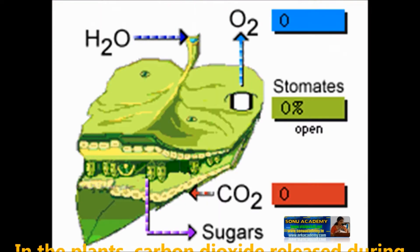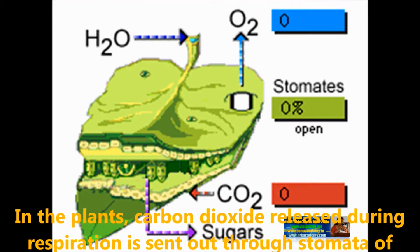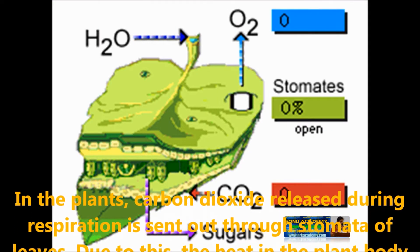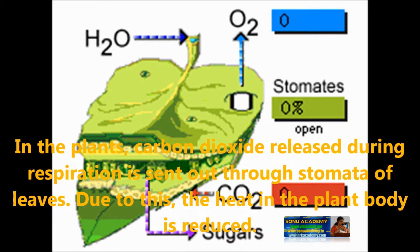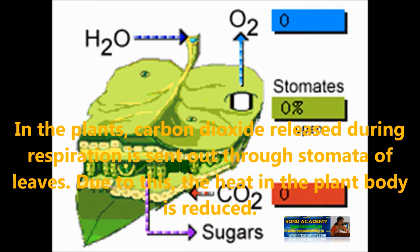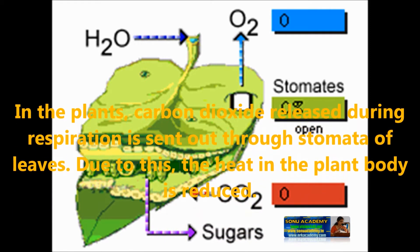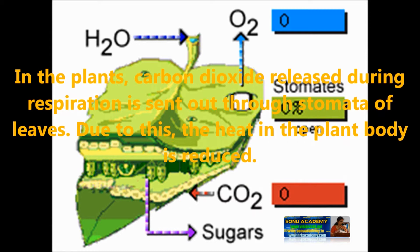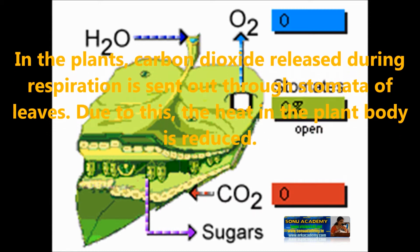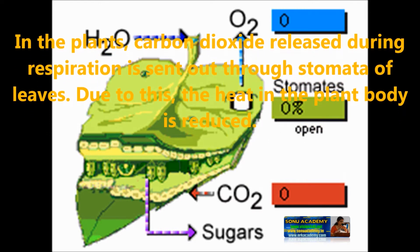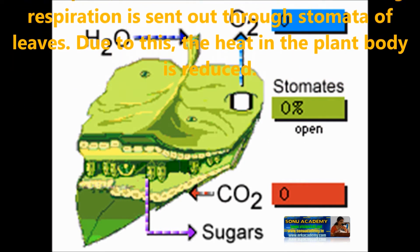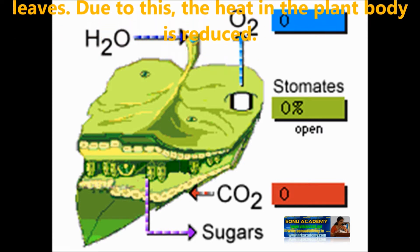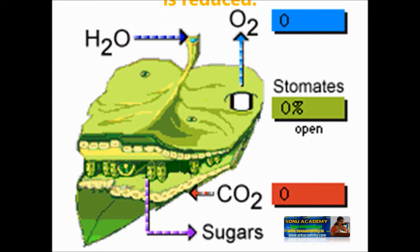In plants, carbon dioxide released during respiration is sent out through the stomata of leaves. Plants discharge the excess water in the form of water vapour during transpiration by leaves. Due to this, the heat in the plant body is reduced.